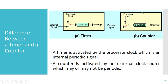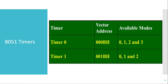There are two timers, Timer 0 and Timer 1, present in the 8051. These timers can be operated in different modes. The modes available for Timer 0 are Mode 0, 1, 2, and 3, whereas the modes available for Timer 1 are Mode 0, 1, and 2. The vector address for Timer 0 is 000BH and for Timer 1 is 001BH. This vector address is used to write the interrupt service routine — whenever Timer 0 overflows and generates an interrupt, the program counter jumps to that vector address.